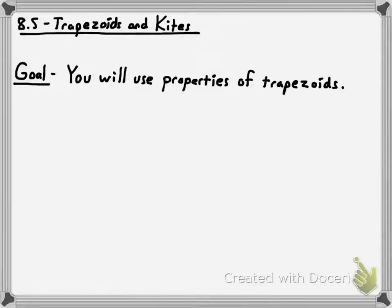Hey, glad to have you here. We're going to start talking today about section 8.5, and we're going to focus on the trapezoid part of this section. It's about using properties of trapezoids and kites — we're going to be using properties of trapezoids specifically.